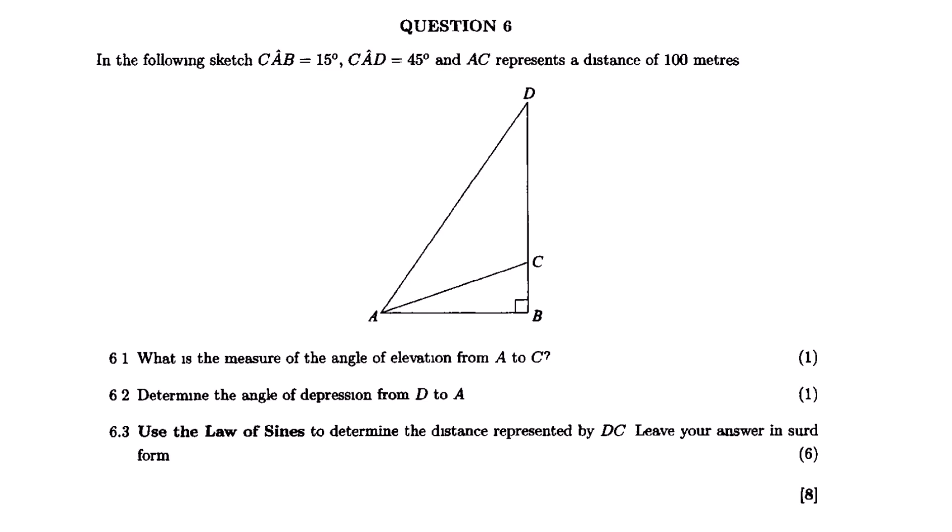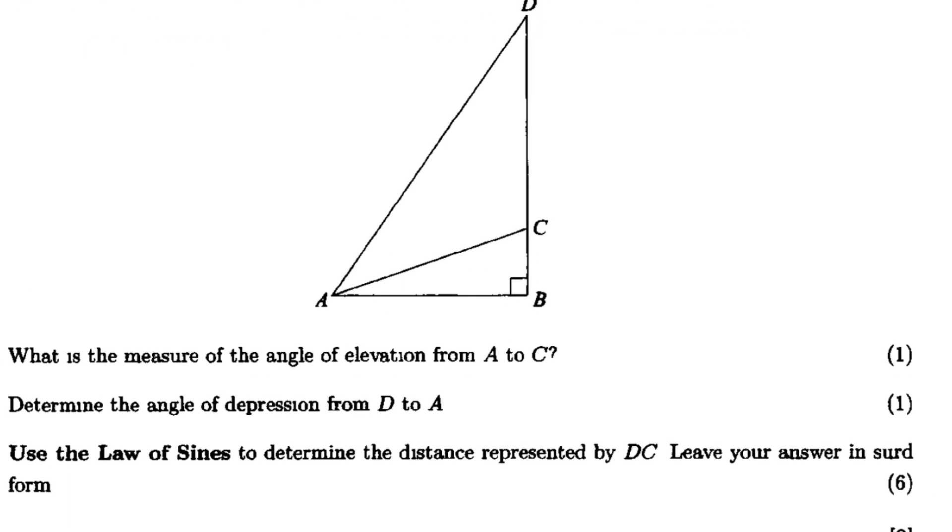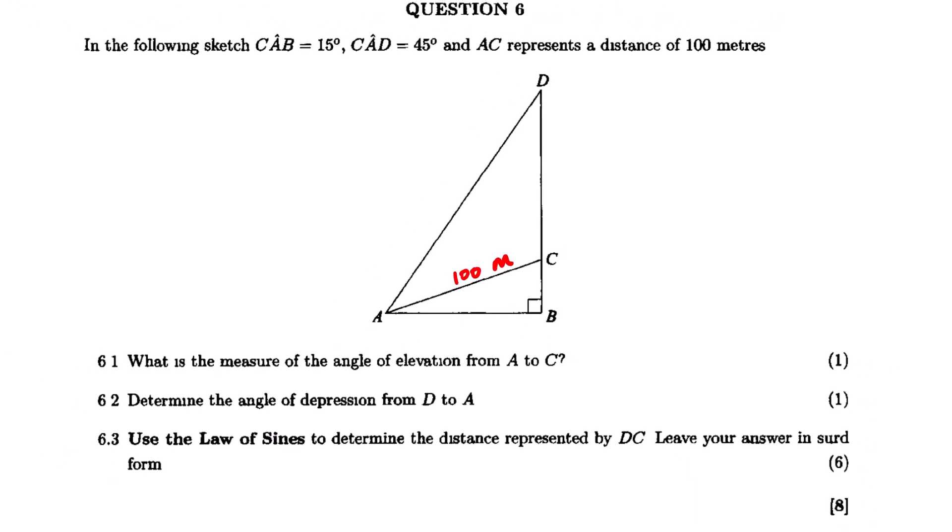This is the pictorial form of the statement. But then we can simply label and add the values or the given data from the scenario to the diagram. Now they are saying AC is 100 meters and then we have these angles here.